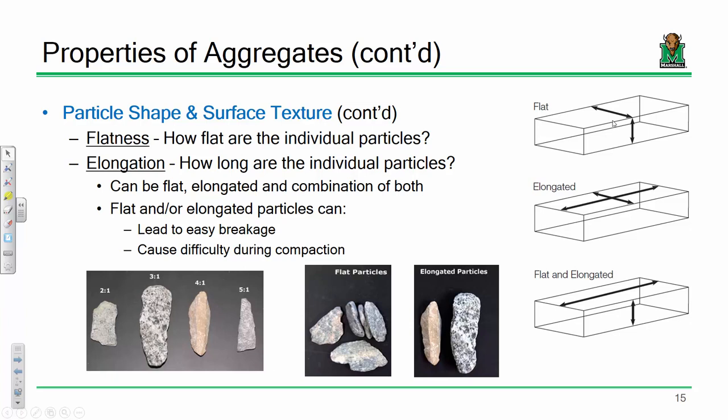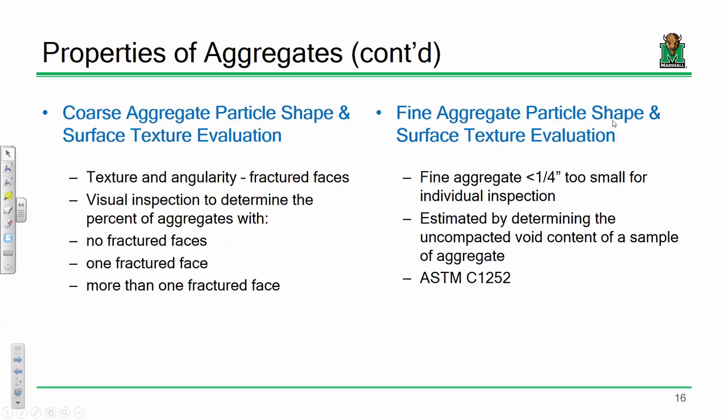Flatness refers to one dimension with respect to thickness. Elongation refers to one dimension with respect to another. Particles can be both flat and elongated. These matter because the flatter and more elongated a particle is, the easier it is to break apart. That can cause difficulty with mixing concrete and definitely with compaction if you're trying to compact an aggregate for a pavement base.